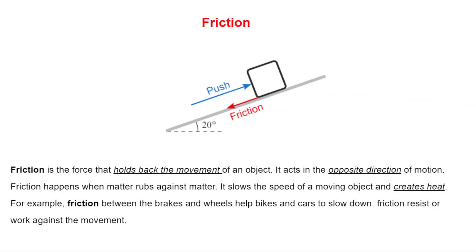Friction is the force that holds back the movement of an object. It acts in the opposite direction of motion. Friction happens when matter rubs against matter. It slows the speed of a moving object and creates heat. For example, friction between the brakes and wheels helps bikes and cars to slow down. Friction resists or works against movement.